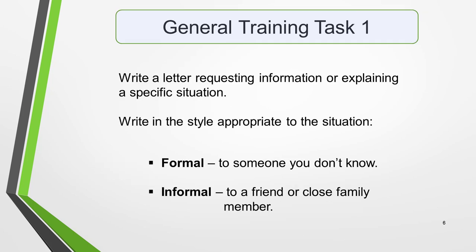In general training task 1 you're required to write a letter requesting information or explaining the situation in relation to a specific circumstance. The letter must be in the style appropriate to the situation. If writing to someone you know it will be formal; for a friend or close family member your language should be informal.